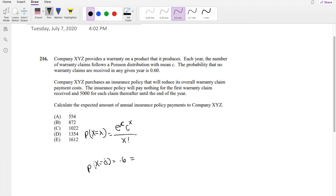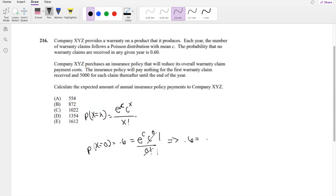So they're saying the probability that X is equal to 0 is equal to 0.6. So we can just plug in 0 for X, so we get E to the C, C to the 0 over 0 factorial. So this is 1, this is 1.